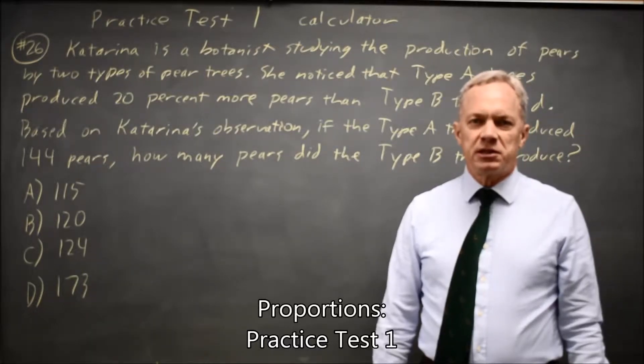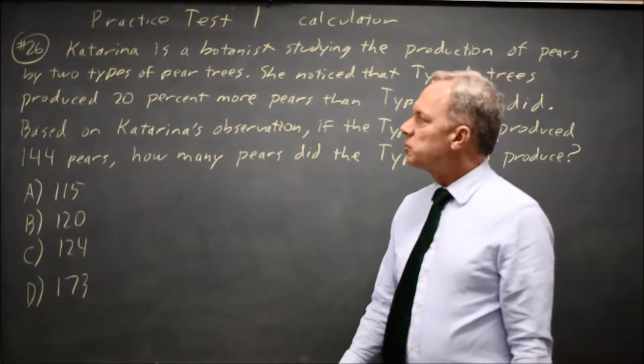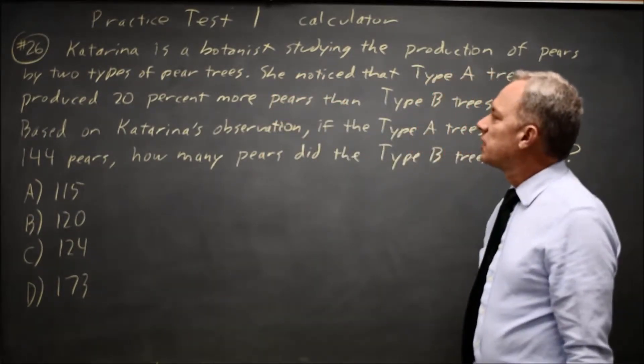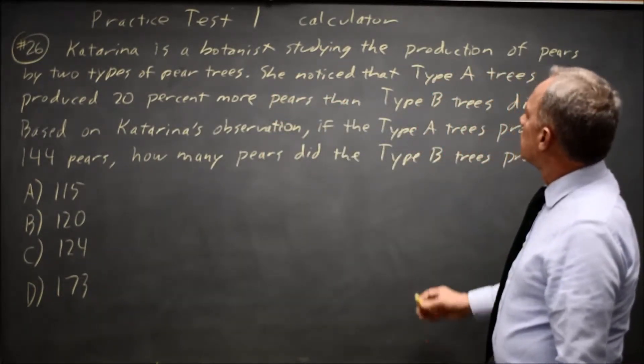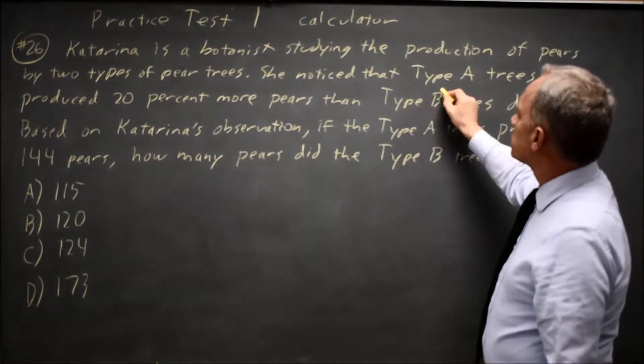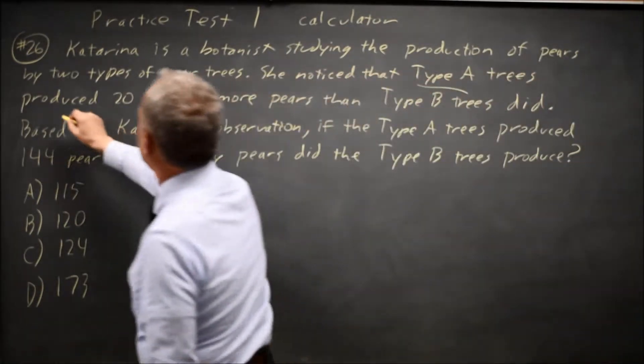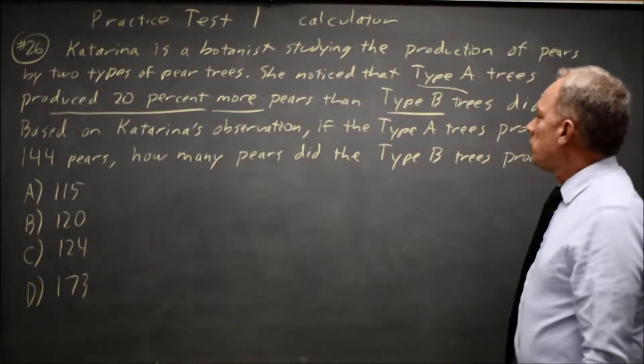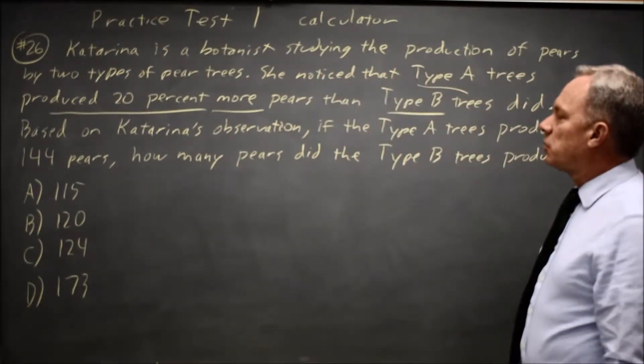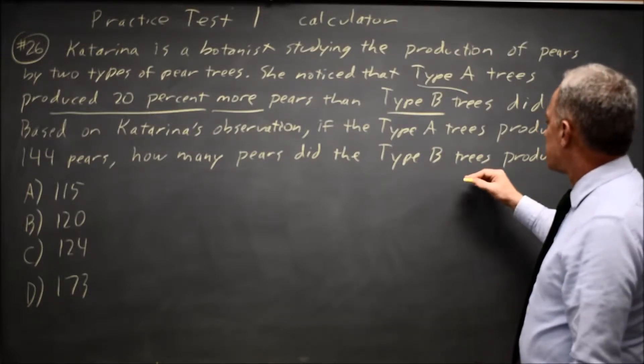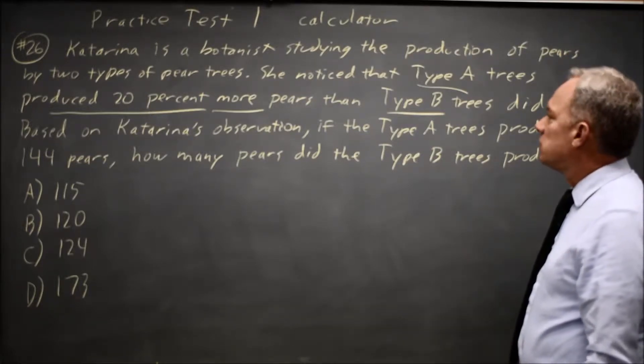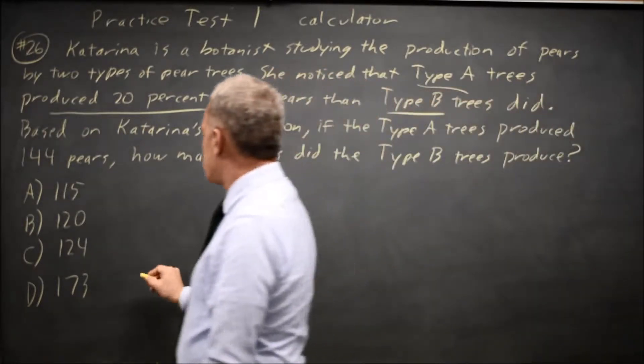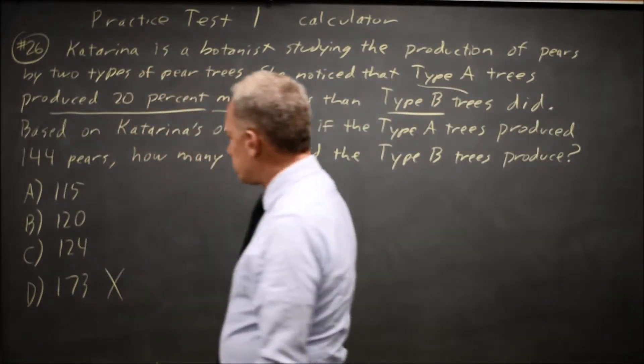This is calculator question number 26 from practice test 1. College Board describes the production of pears by two types of pear trees with the observation that type A produced 20% more than type B. If type A produces 144 pears, how many pears do the type B trees produce? Since A produces more than B, B should be a number less than 144, so it's not choice D.